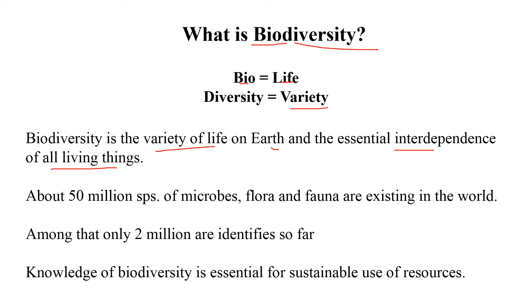Looking at the number of species or biological diversity, the total amount is almost 50 million species of microbes, flora, and fauna existing in the world. But of those 50 million species, we only know about 2 million species that have been identified. So almost 95 to 98 percent of species are still unknown to us — we only know about 5 to 10 percent of all species.